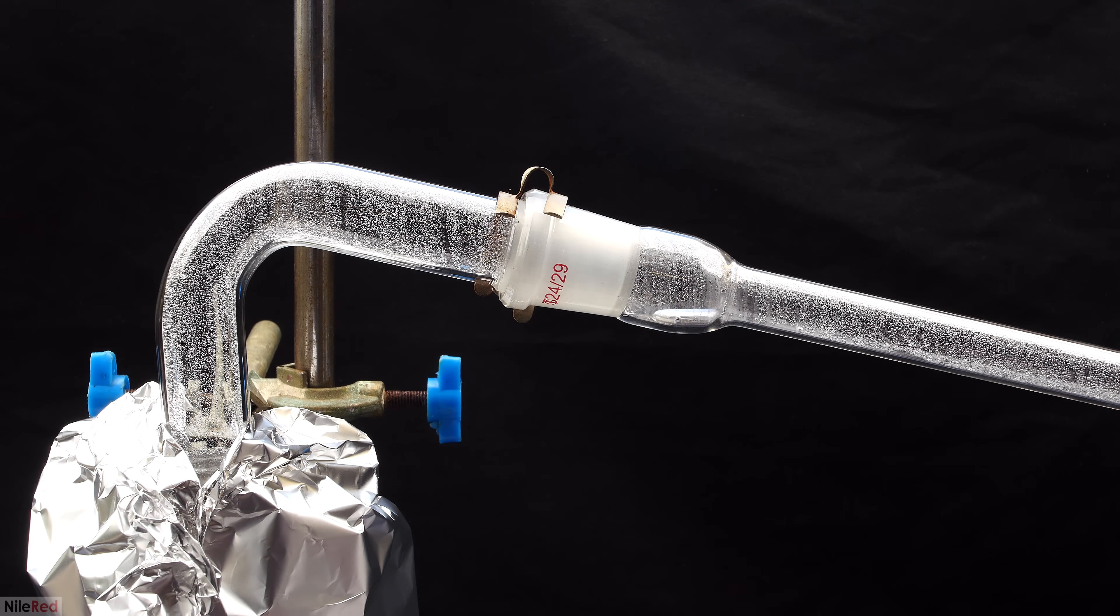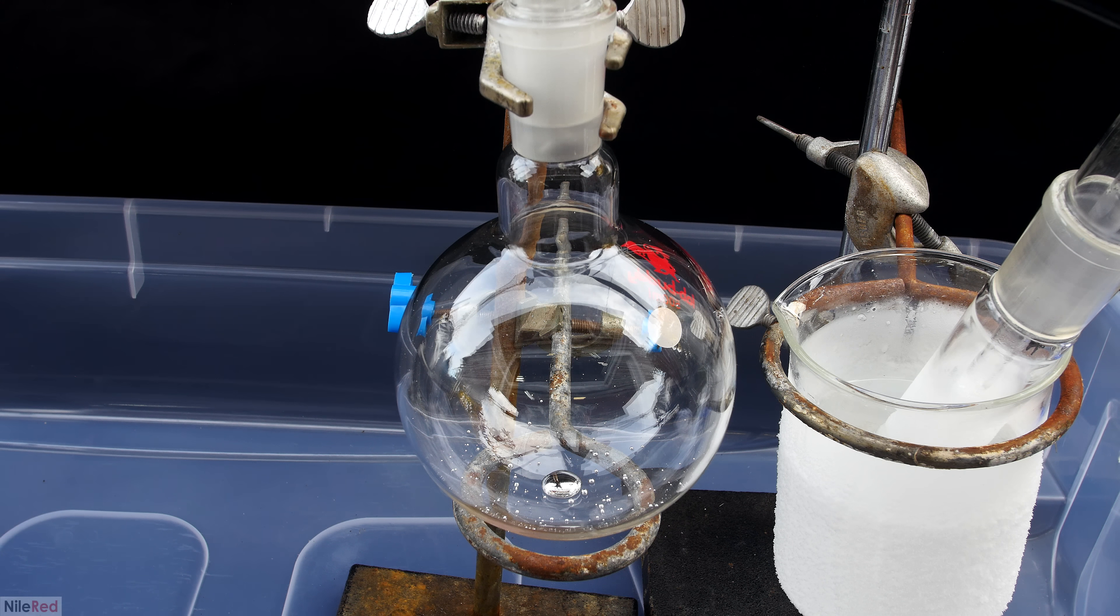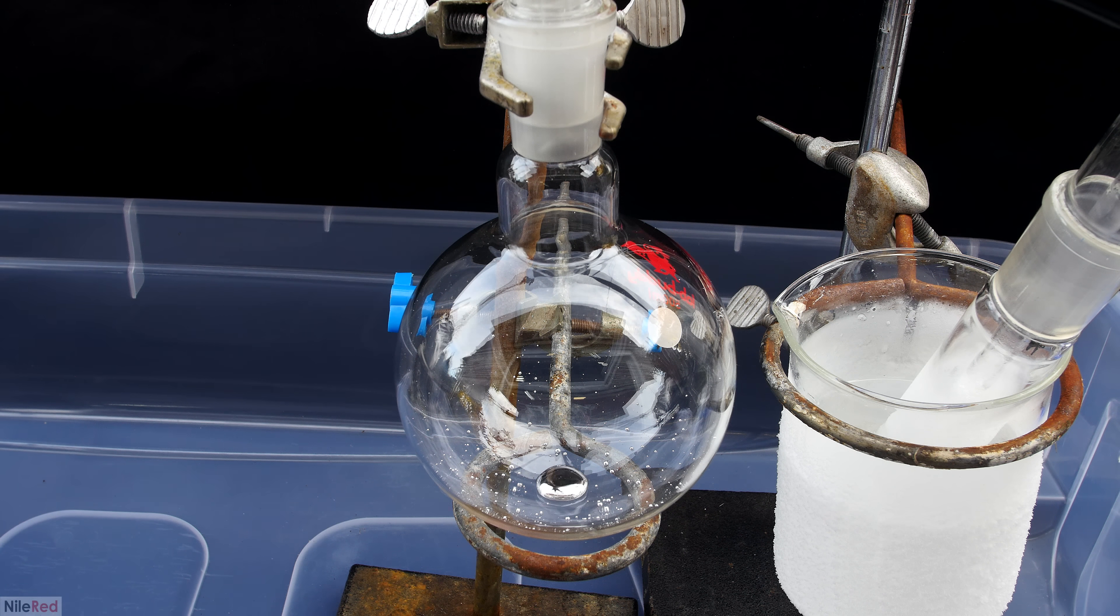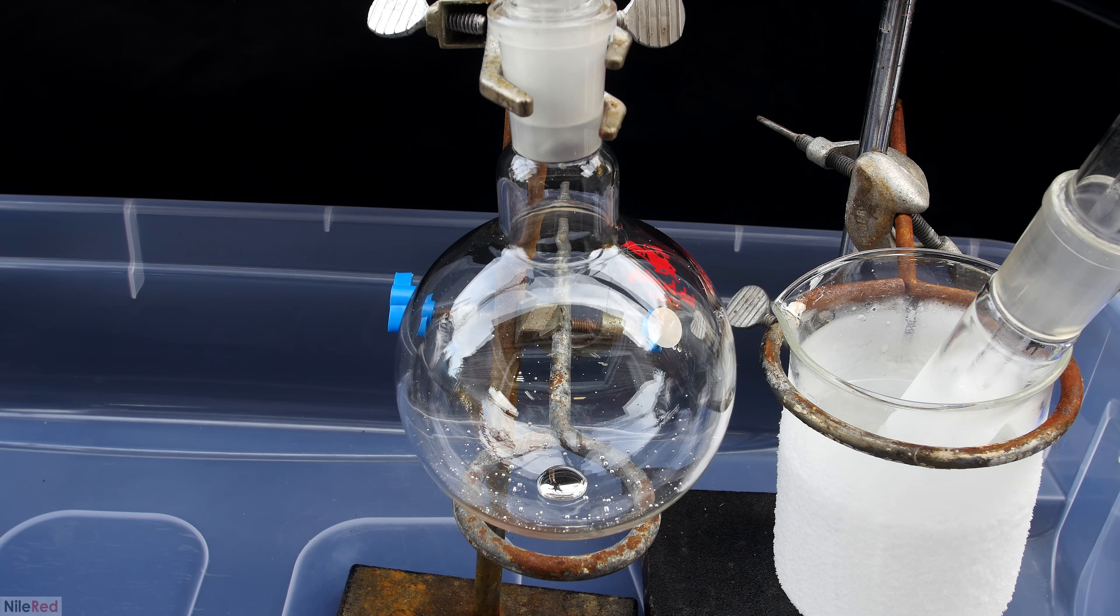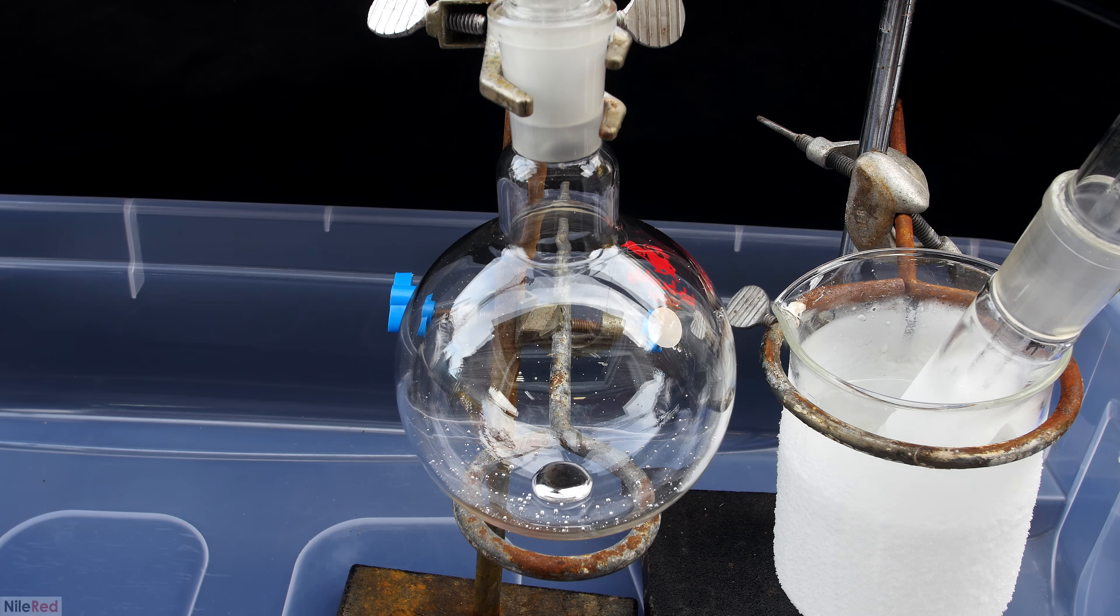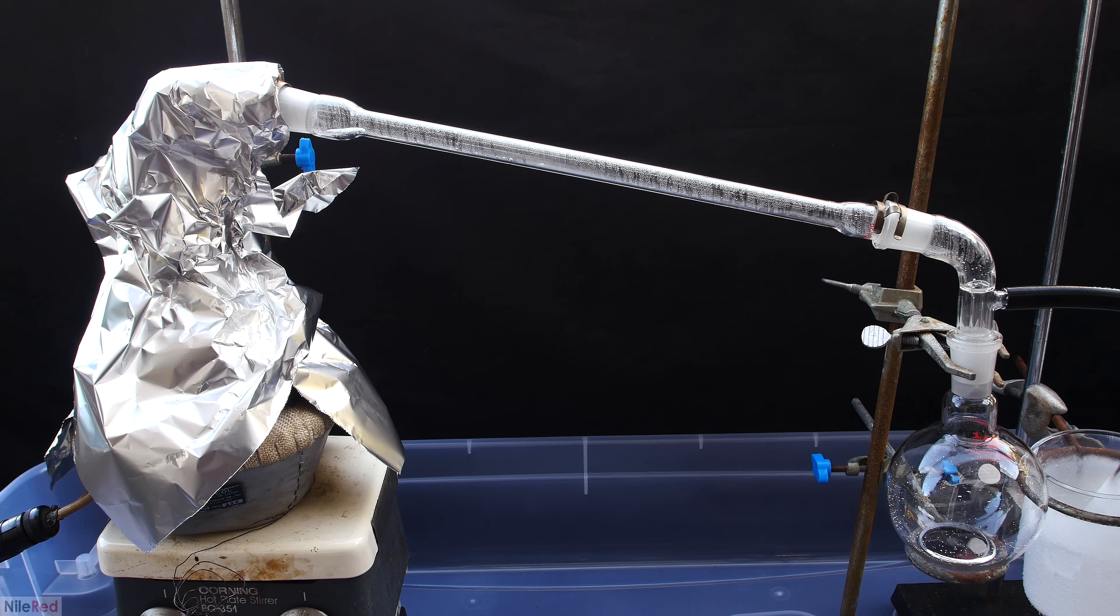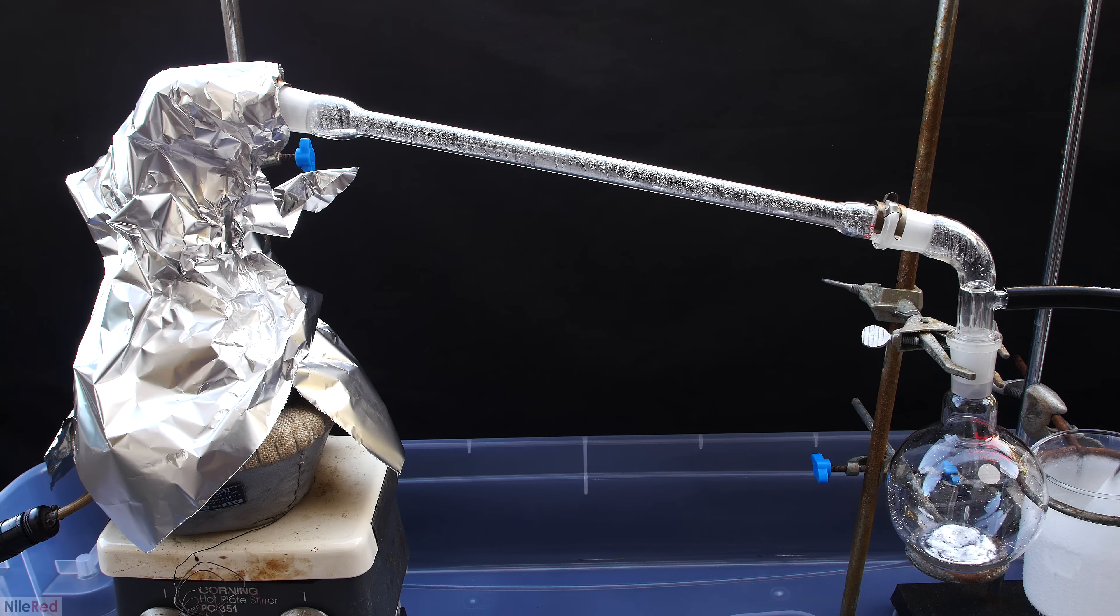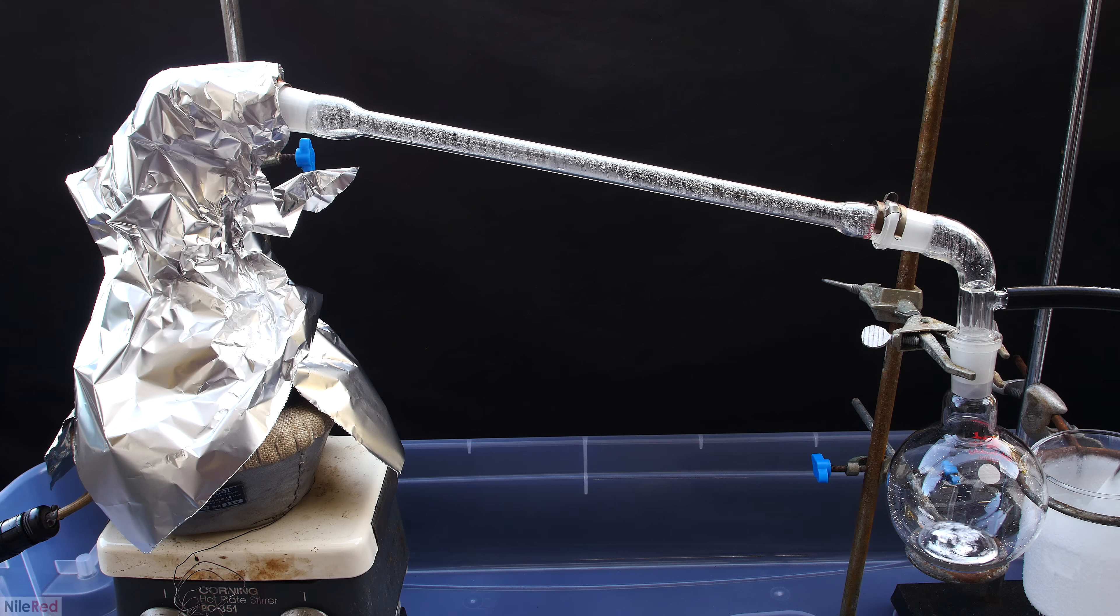A lot of the mercury vapor was condensing on the sides of the 1 liter flask, so I covered it with aluminum foil to try to insulate it and help the vapor come over. Now, when we take a look at the receiving flask, we see that we're collecting some nice and clean mercury. From this point on, things are pretty much in autopilot, and we just have to wait for everything to distill over. To increase the rate of distillation, and to help the mercury make it over, I decided to insulate the adapter as well.